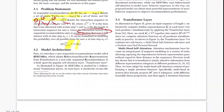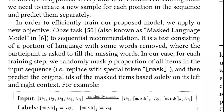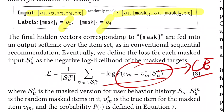For training, BERT4Rec uses masked language modeling. Randomly sampled items in the input sequence are replaced with a special [MASK] token, and the model predicts the original item IDs at those positions. For example, if the input sequence has v2 and v4 masked, we predict those at the output. The loss is the negative log-likelihood (cross-entropy) averaged over all masked positions.